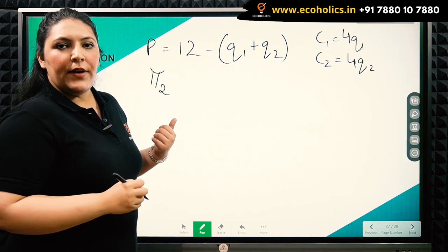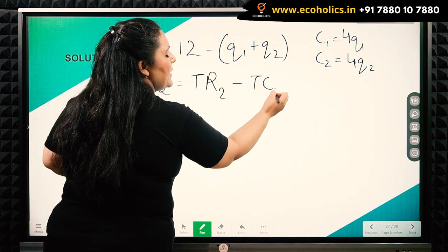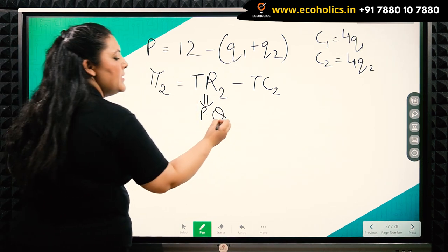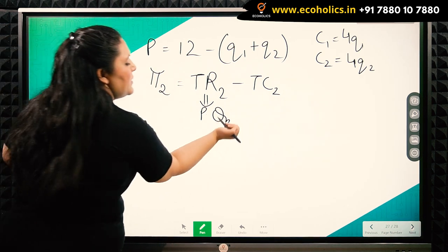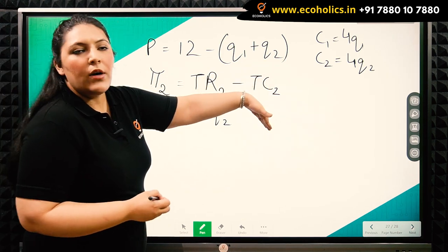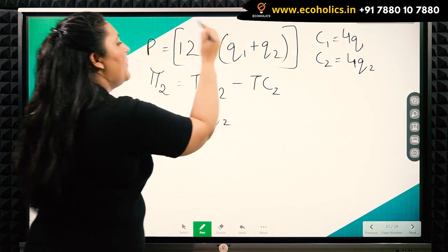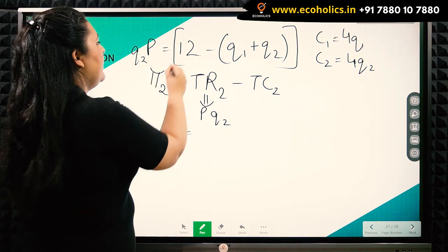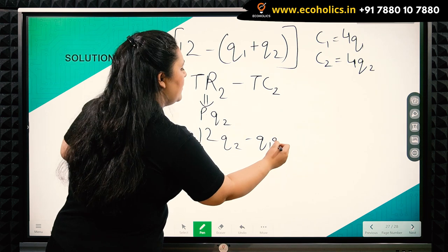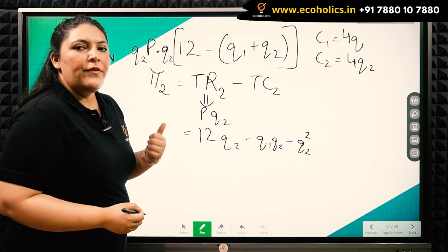For this, we require the profit function of the second firm, equivalent to total revenue minus total cost of the second firm. Total revenue is price times Q2. Substituting the price function and multiplying through, we get 12Q2 minus Q1Q2 minus Q2 squared. This is the profit function of the second firm.